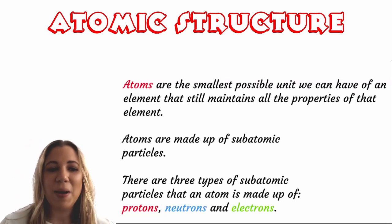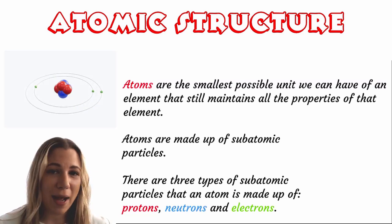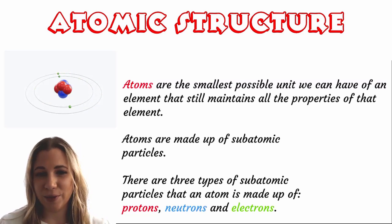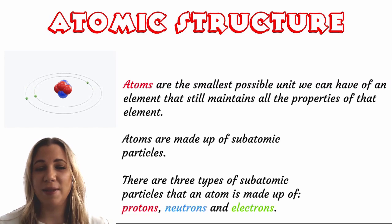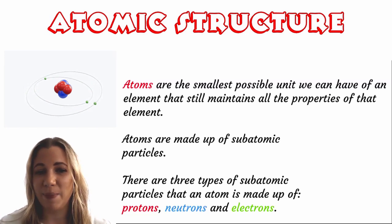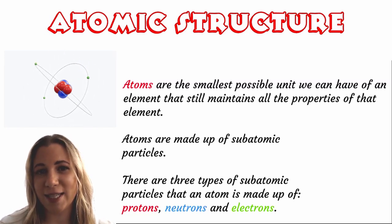Now atoms are tiny but they are made up of even tinier parts that we call subatomic particles. There are three types of subatomic particles that an atom is made up of: protons, neutrons and electrons.